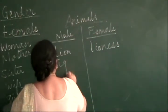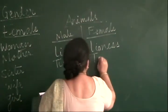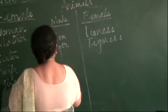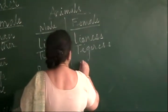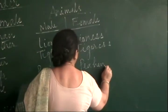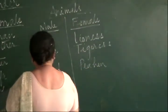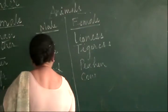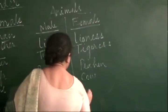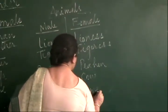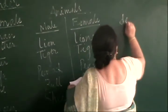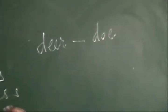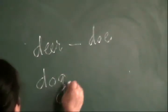Peacock, peahen. Bull and cow, sheep and ewe, deer and doe, dog and bitch.